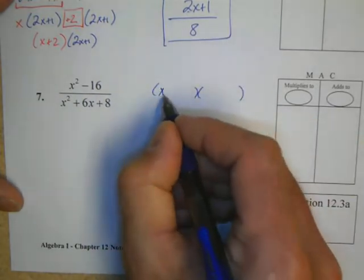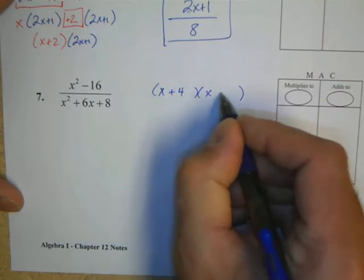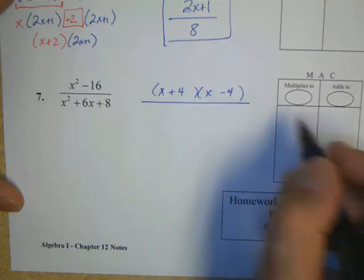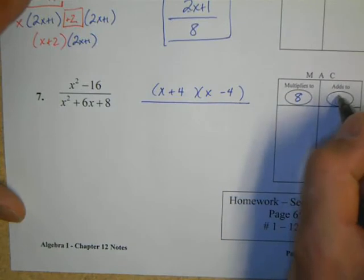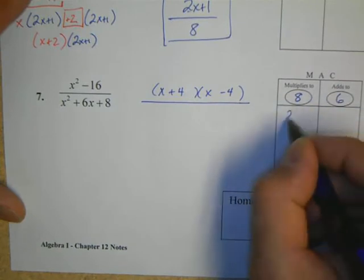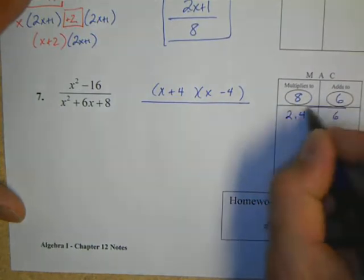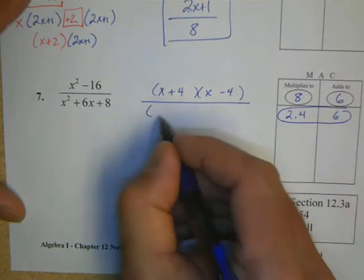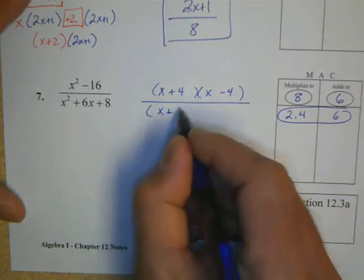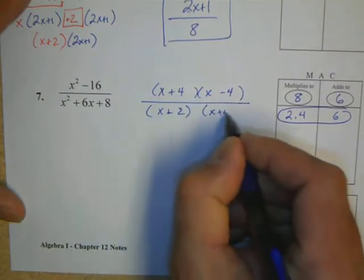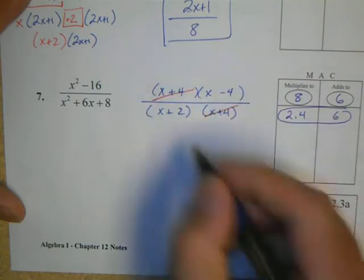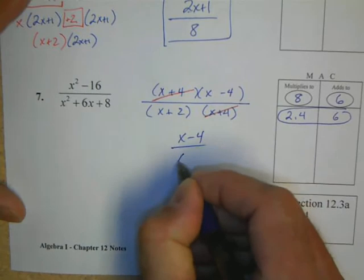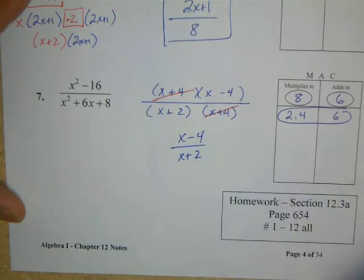Our last problem on this page, we have an idea of the difference of two squares on the top. Now, x squared minus 16 is the difference of two squares, and that factors to x plus 4, x minus 4. When we look at the bottom, we say what multiplies to 8 that adds to 6. Well, that's 2 and 4. So my denominator factors are x plus 2 and x plus 4.